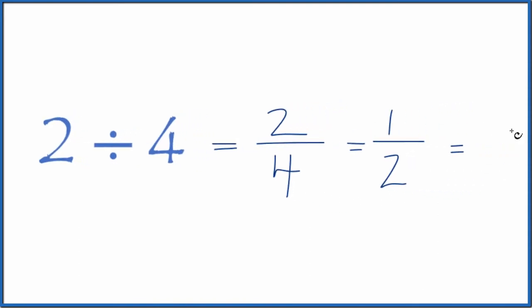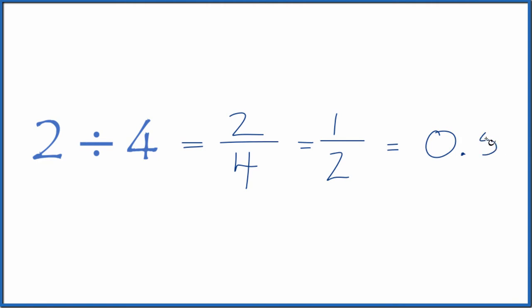And you might know that 1 half is equal to the decimal 0.5. You could just do that on your calculator. 2 divided by 4, or 1 divided by 2, that gives you the decimal 0.5.